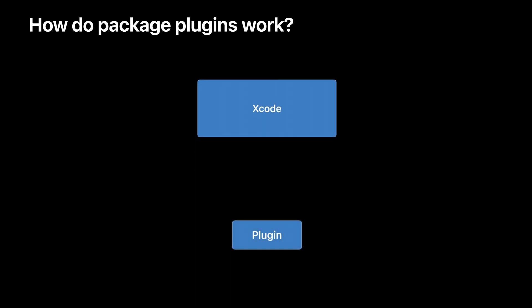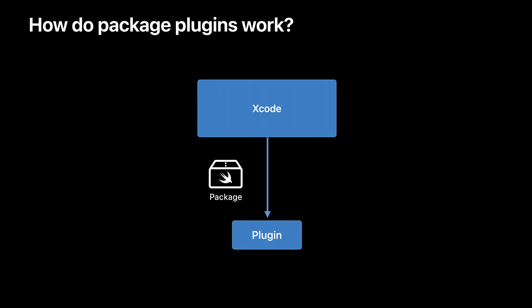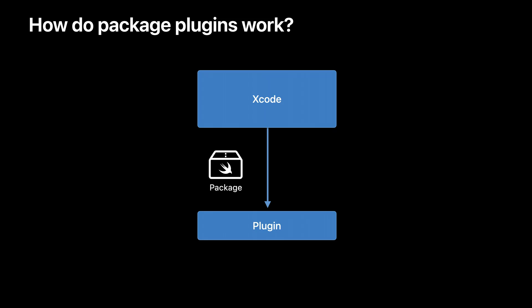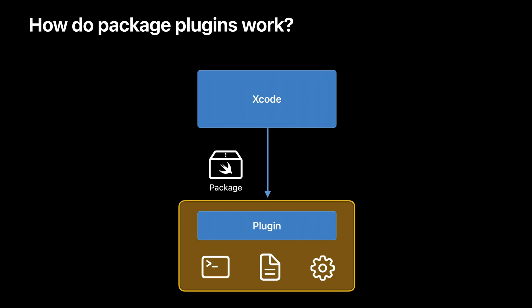Each plugin runs as a separate process. Plugins have access to a distilled representation of the input package, including its source files, and also get information about any dependencies of the package. Many plugins call command line tools as part of doing their work. Plugins can also create files and directories, and can perform other actions using standard libraries such as Foundation. A plugin runs in a sandbox that prevents network access and only allows writing to a few places in the file system, such as the build outputs directory. Command plugins can ask for permission to also modify files in the package source directory. If the user approves, the sandbox is configured to allow writing to those locations.